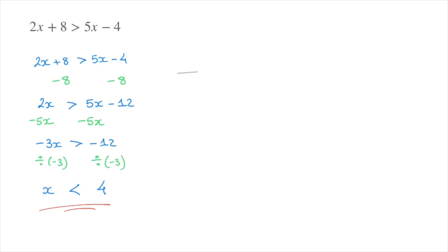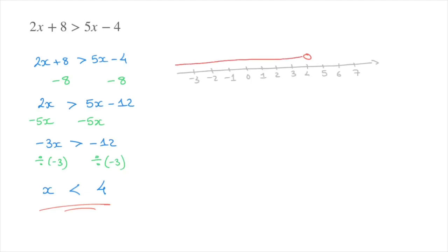As always, we can illustrate this answer on the number line. With 0, 1, 2 marked and so on, to illustrate x less than 4, I place a dot above the 4 and draw an arrow starting from that dot pointing towards all the numbers less than 4. Notice that in this case I leave the dot above the 4 completely empty — that's to highlight the fact that x cannot equal 4; it must be less than it.